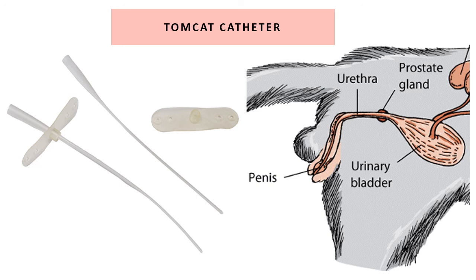Usually in cases where a female cat is blocked, a cystocentesis is performed to relieve pressure within the bladder and to collect urine. If x-ray and ultrasound show urinary stones, it goes to surgery — no need for catheterization. So how does the actual catheterization happen? Click on the next video to find out.